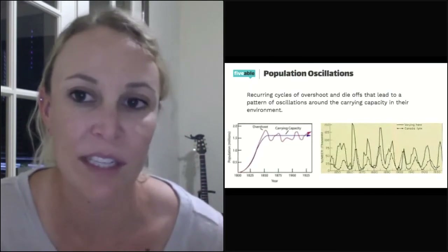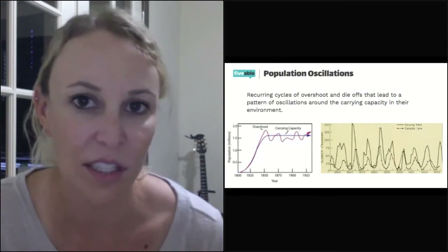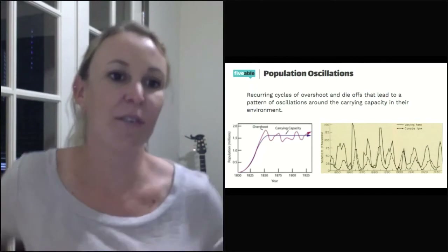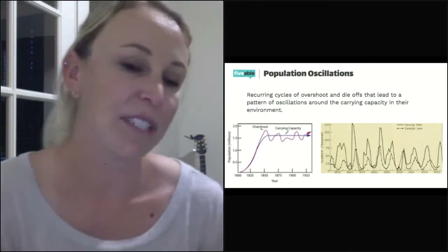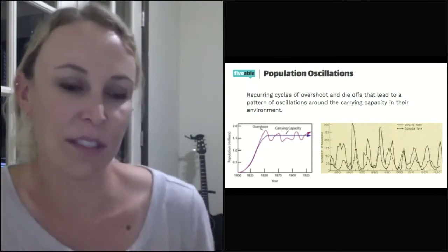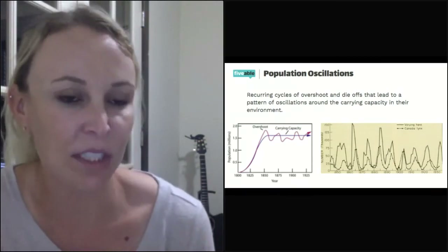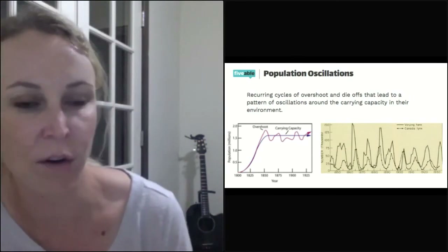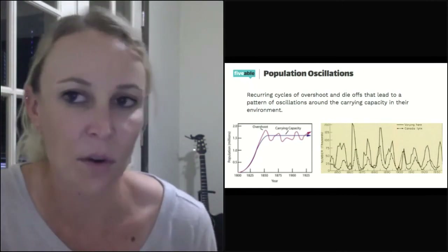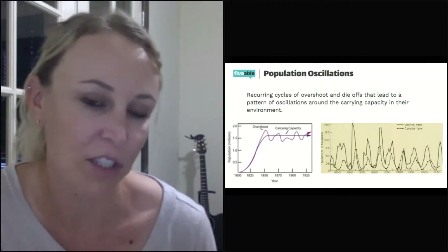The lemmings are a good example of overshoot and dieback, and what that causes are population oscillations — meaning the population goes up and down. These graphs show different populations and how they oscillate. The first graph shows the carrying capacity as a line, with the population growing toward that maximum but in reality not staying there — it overshoots and diebacks repeatedly. That's often because of what's happening in the ecosystem, since no ecosystem stays exactly the same every single year.